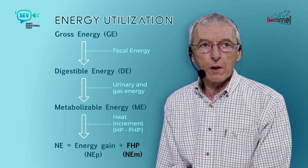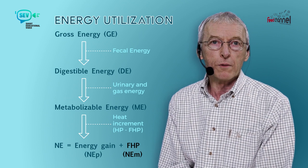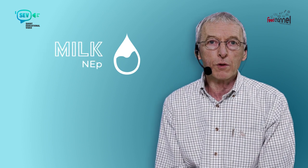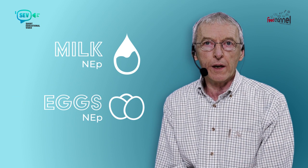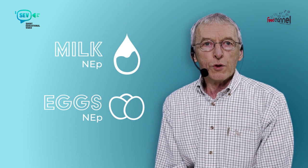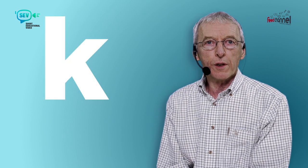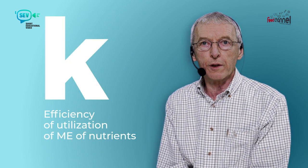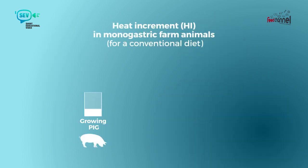Keep in mind that energy gain can be growth of an animal — in broilers or in growing pigs, for instance — but it can also be exported energy as milk in the sow or eggs in laying hens. The ratio between net energy and ME is called k, or the efficiency of ME for net energy.